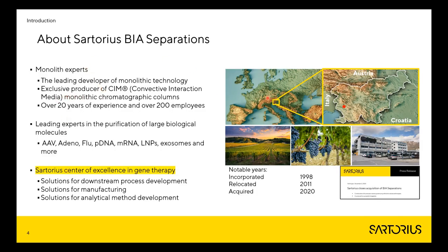Sartorius BIA Separations is located in the center of Europe, surrounded by Italy, Austria, and Croatia. We are the leading developers of monolithic technology. We produce convective interaction media, monolithic chromatographic columns. For more than 20 years now, we have 200 employees.